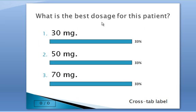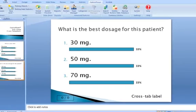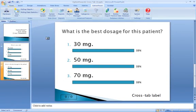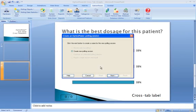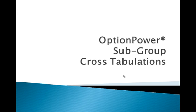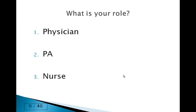We'll ask them what they think in terms of what's the best dosage for this particular patient. We'll save our presentation and go into the polling mode in PowerPoint. Here's our title slide. Now we'll ask the audience — in this case we've got an audience of 40 people. We'll simulate some data and ask them what their role is, getting some variation in the data set.